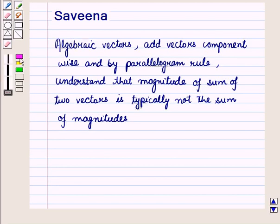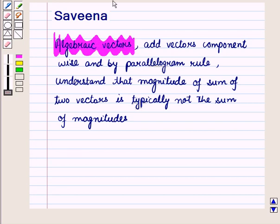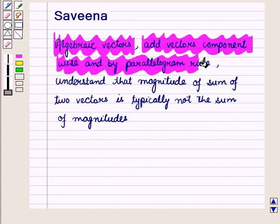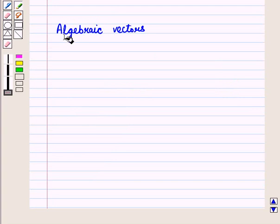Hello and welcome to the session. In this session we will discuss algebraic vectors, how to add vectors component-wise and by the parallelogram rule, and we will understand that the magnitude of the sum of two vectors is typically not the sum of the magnitudes. First of all, let us discuss algebraic vectors.